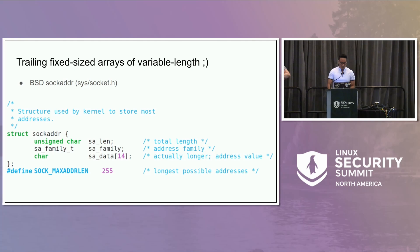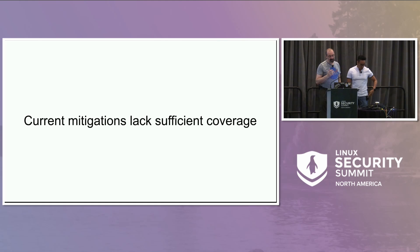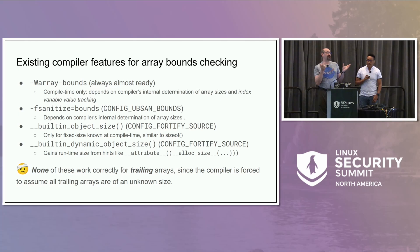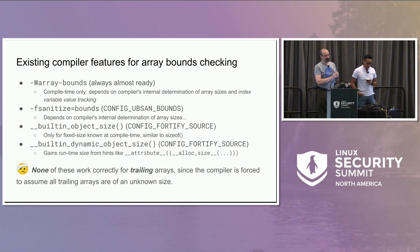While there are mitigations we can use in the compiler — array bounds for compile-time detection, sanitizers for runtime bounds checking, and the built-in object size / built-in dynamic object size built-ins for fortified operations like memcpy and strcpy — none of these work for trailing arrays, whether the size is specified or not. If you've got an array in the middle, mitigations work. But if something is at the end, the compiler completely steps away and says it cannot reason about this, because code from 50 years ago has been doing insane things.